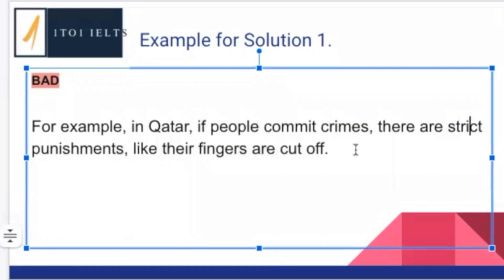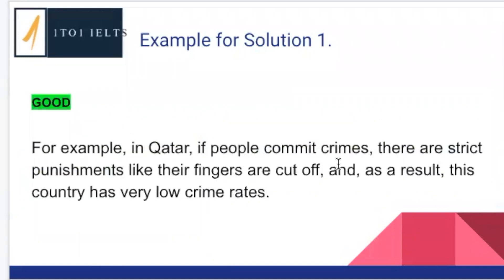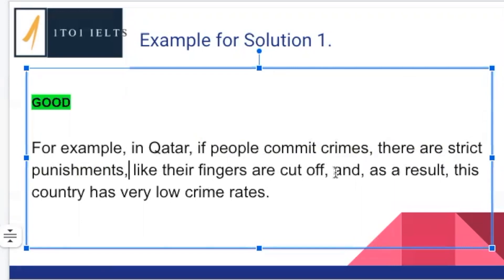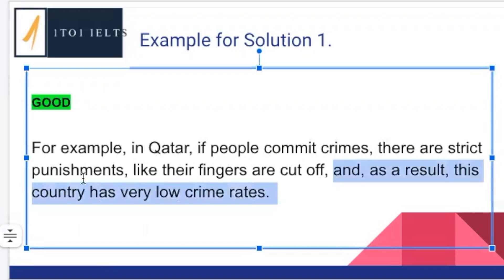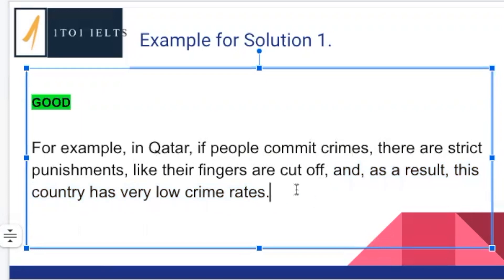If we add the result to the example, we'll have a really clear, specific example that supports our main idea. The first part stays exactly the same: 'For example, in Qatar, if people commit crimes, there are strict punishments like their fingers are cut off.' Then we add the result: 'And as a result, this country has very low crime rates.' This result shows that these strict punishments stop people committing crime. The example now supports the idea that introducing strict punishments reduces crime. This is what we need to do to support our ideas.